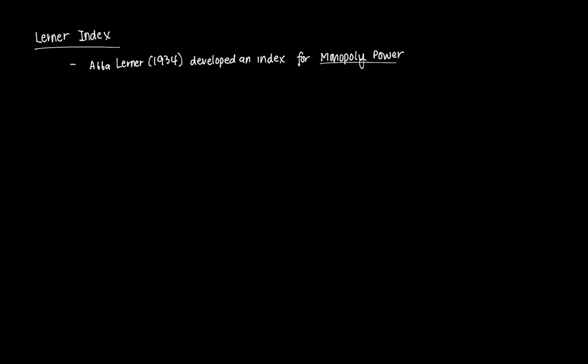Hi everyone, and welcome to this video on the Lerner Index of Monopoly Power. This is a very important topic when it comes to trying to quantify how a monopoly actually behaves. In the last video, we derived a form from the marginal cost and the marginal revenue. The form looked something like this: PQ minus MCQ, all over PQ, is equal to 1 over the price elasticity. That form is known as our Lerner Index.